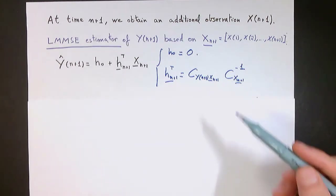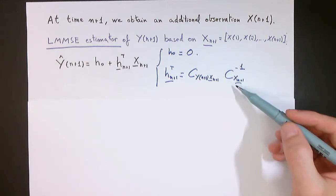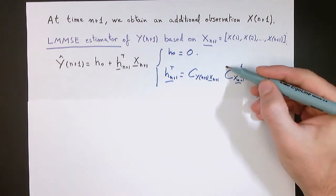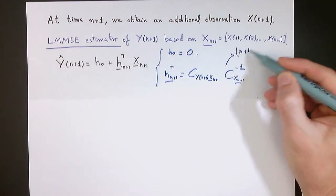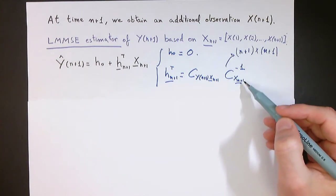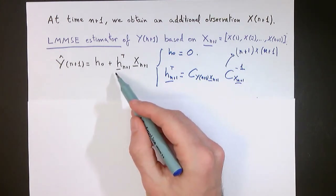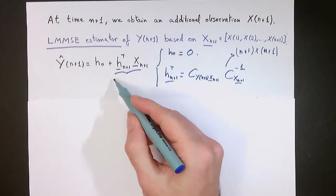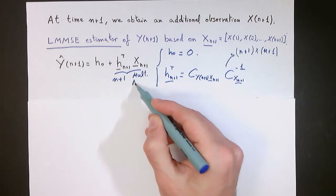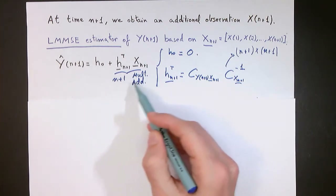Let's observe for a moment the operations that we need to perform in order to obtain the estimate of our new sample of y. First, much as before, we will need to invert the covariance matrix of the data vector, which in this case is an n plus 1 times n plus 1 matrix. So the dimensions of this matrix that we need to invert have grown by one unit with respect to the previous time step. In the same way, this operation consists of n plus 1 multiplications and additions, which is one more multiplication and addition than before.